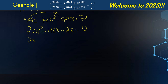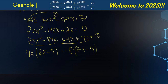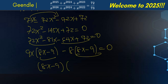I'm going to factor this quadratic. We rewrite it as 72x squared minus 81x minus 64x plus 72 equals 0. Factoring: 9x times 8x minus 9 minus 8 times 8x minus 9 equals 0, giving us 8x minus 9 times 9x minus 8 equals 0.